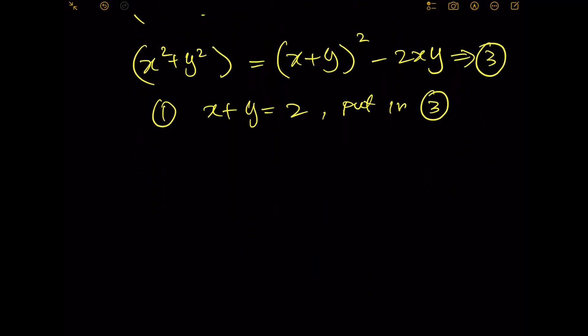Therefore x^2 + y^2 equals 2^2 minus 2xy. Now we're going to square both the left hand side and the right hand side. Of course 2^2 equals 4.